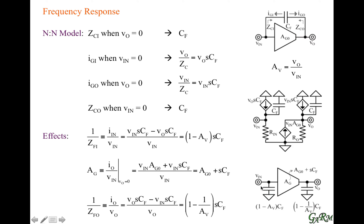The equivalent capacitance at the output is (1 − 1/A) times the original capacitance of the feedback capacitor. When we combine all these effects into a schematic, the feedback capacitor produces an equivalent input capacitance, an equivalent output capacitance, and it alters the equivalent transconductance across the circuit.